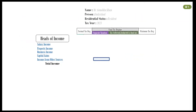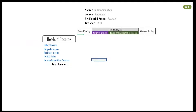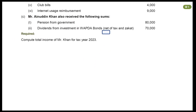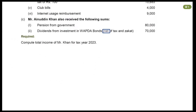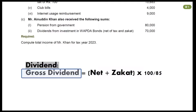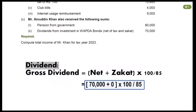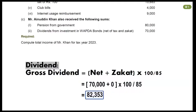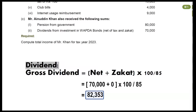In our answer format, the dividend will be mentioned in front of income from other sources, right under the final tax regime. The next challenge is that we need the gross amount of dividend, but the question provides us with the net amount. Recall the formula discussed earlier to calculate gross dividend. The amount of zakat has not been mentioned in the question, so it will be taken as zero. Withholding tax is assumed at 15 percent, so a factor of 85 has been used. The gross amount comes to Rupees 82,353.